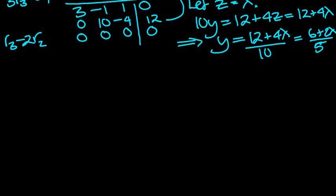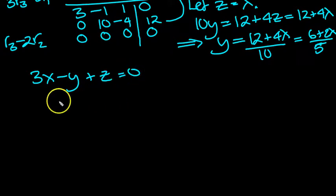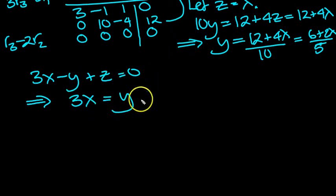Give ourselves a bit more room and now we'll get x as well, shall we? Okay, so the x then from here, this line here, so 3x minus y plus z equals naught. So that tells us then that 3x is equal to y, move the y over, move the z over, it flips the sign as well, so we've got y minus z. Y is equal to 12 plus 4 lambda over 10.